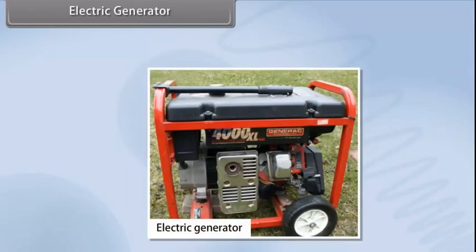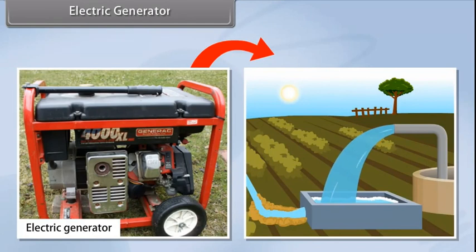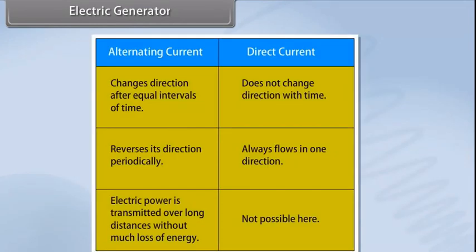An electric generator converts mechanical energy to electrical energy. It forces electrical charge to flow through an external electrical circuit. Examples include a water pump, which causes water to flow, but does not create water. Electric generators operate based on electromagnetic induction. That is, whenever a conductor moves to a magnetic field, a current is induced in this conductor. If a magnet is spinning inside a coil, alternating current is induced in the coil. Alternating current changes direction after equal intervals of time. The other type of current is direct current, which does not change direction with time.